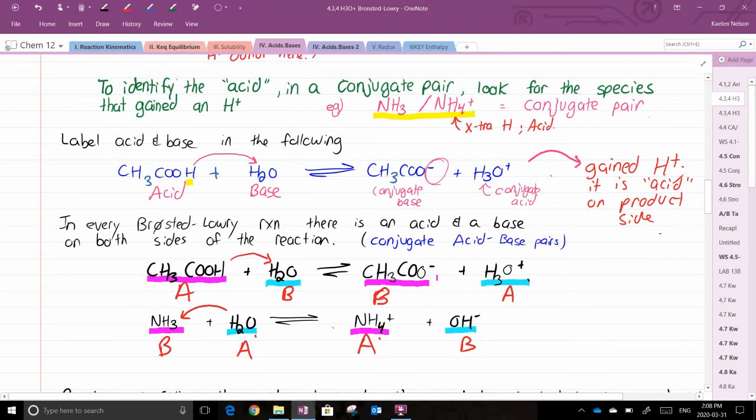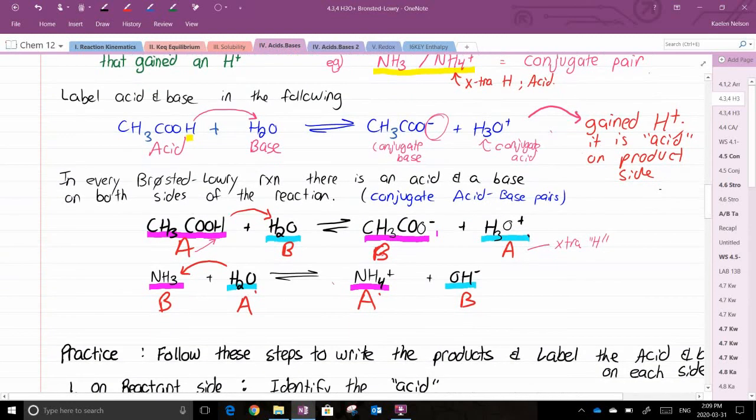In every Bronsted-Lowry reaction, there is a conjugate acid and a base on both sides of the reaction. In this reaction below, I have color coded for you your conjugate acid-base pairs. So between CH3COOH and CH3COO-, both underlined in purple, those are an acid-base pair. The acid is the one with the H. The base is the one without. Again, in the two that are outlined in blue, H2O and H3O+, the extra H is over here. And that is why I have labeled this one my acid, and H2O, my base. The same is true for the NH3, NH4 pair that I have labeled below.